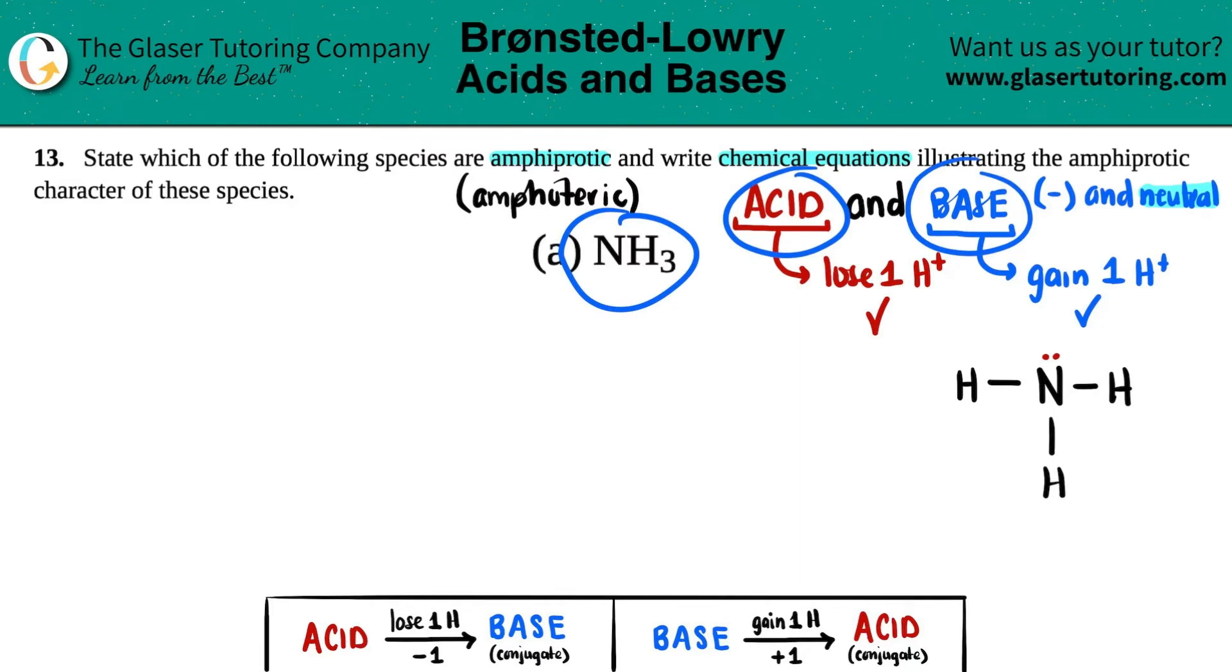So it's amphiprotic or amphoteric. Now we just have to write the chemical equations. I'm going to write two of them - we'll say NH3 and then we'll do it again. In one instance, NH3 is going to act as the acid, and in the other instance, NH3 is going to act as the base.